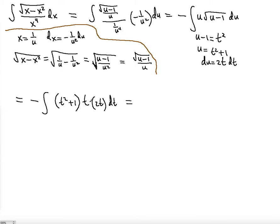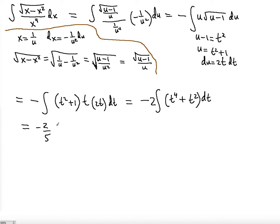Let's simplify. We have a negative sign, let's put a 2 outside. We get t to the fourth plus t squared — because t squared times t squared gives t to the fourth, and t squared times one more t and one more t gives t squared — so we have negative 2 times integral of t to the fourth plus t squared dt. Applying the power rule: negative 2 fifths t to the fifth minus 2 thirds t to the third plus a constant.